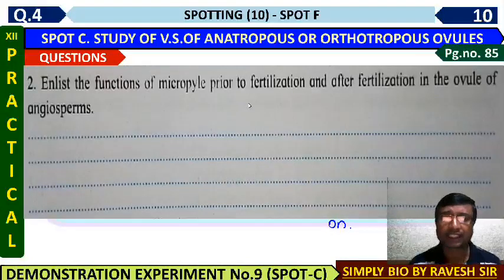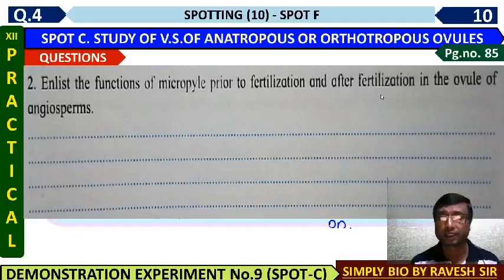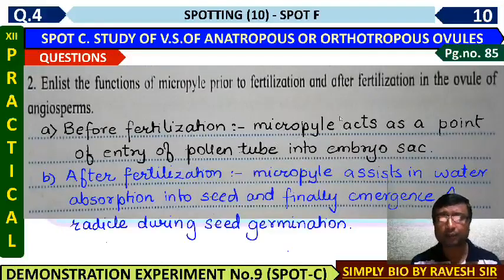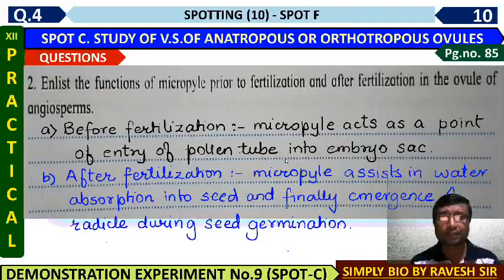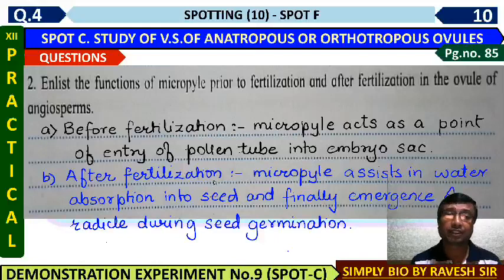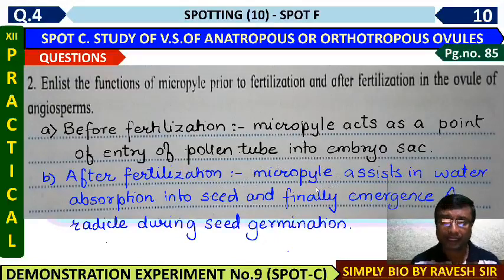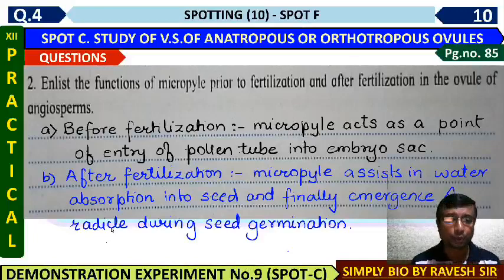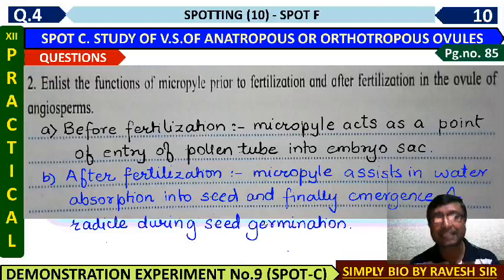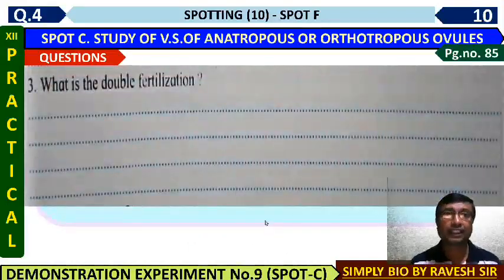What is the function of the micropyle? Before fertilization, the micropyle is the access point of entry of the pollen tube into the embryo sac — this is called porogamy. After fertilization, when the seed is formed, the pore in the seed coat (also called micropyle) absorbs water. After seed germination, the radicle — the first root — also emerges through this micropyle.